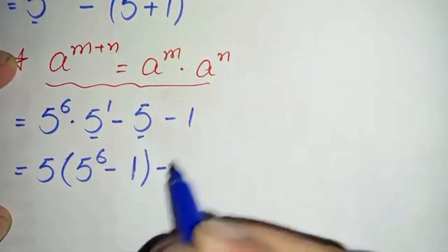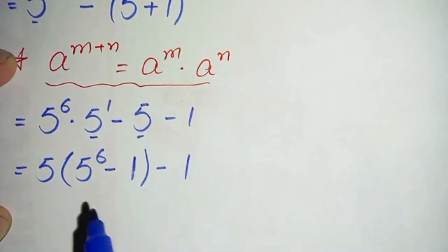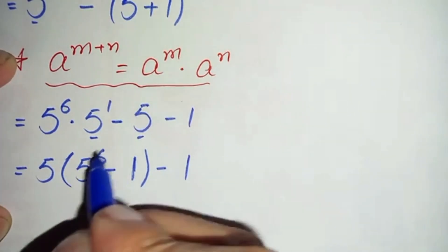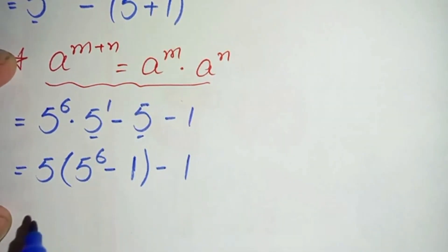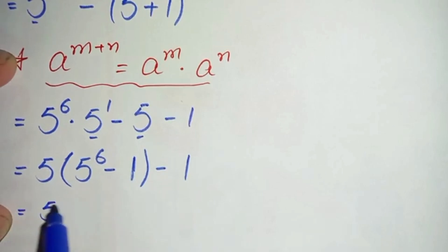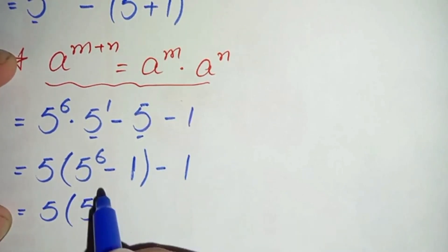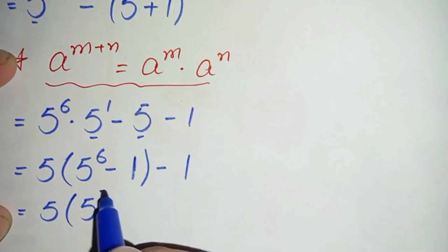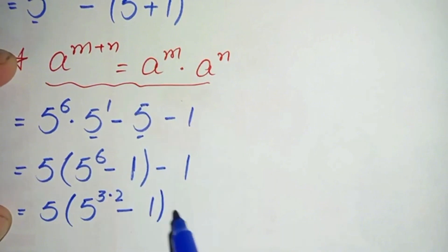Minus this one and minus this one. In the next step we will factorize this power 6 to 3 times 2. So this will become 5 times 5 raised to power 6 — where 6 is the same as 3 times 2 — minus 1, minus 1.